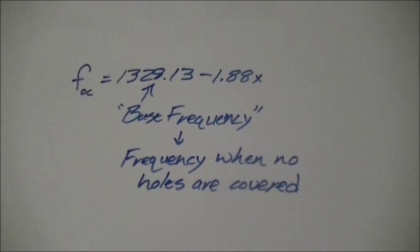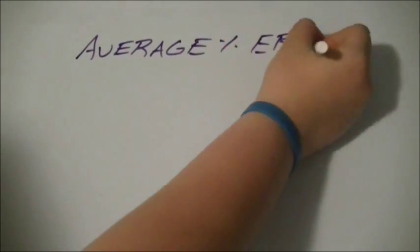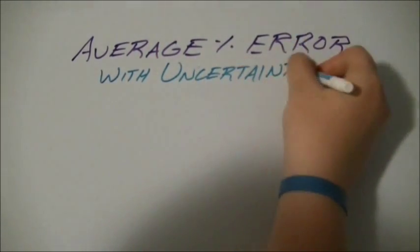And from that, I was able to create the equation Foc equals 1328.13, which is the base frequency or frequency when no holes are covered, minus 1.88x, where x is in millimeters squared. I used that equation to collect this data. The average percent error of these results was 7.758%, but when I included uncertainties, that average was bumped down to 3.844%.